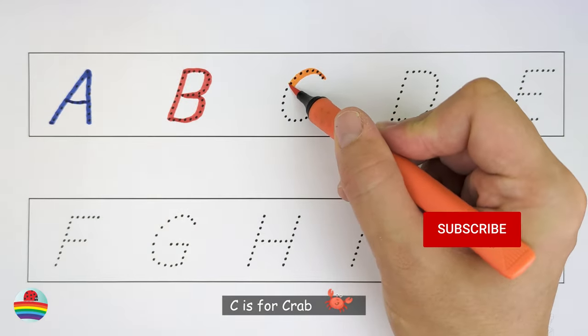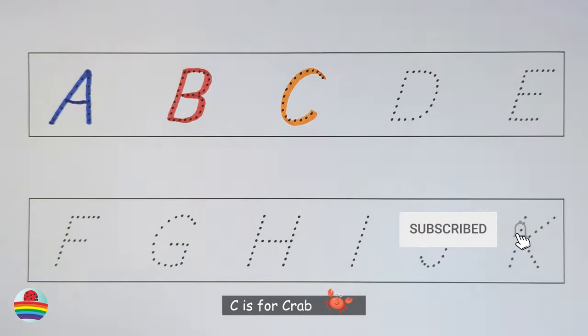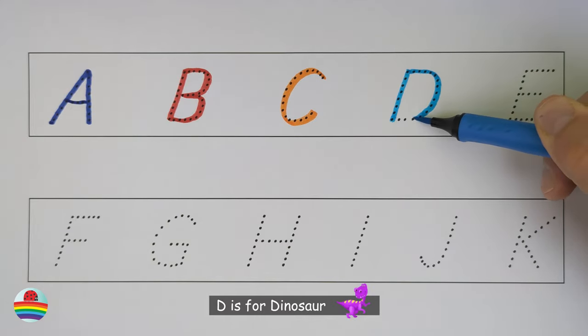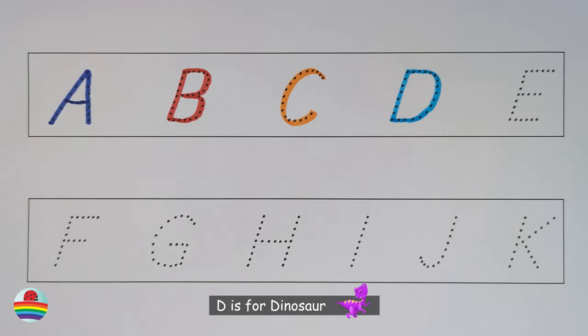C. C is for crab. C. D. D is for dinosaur.